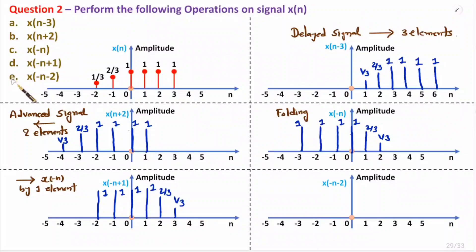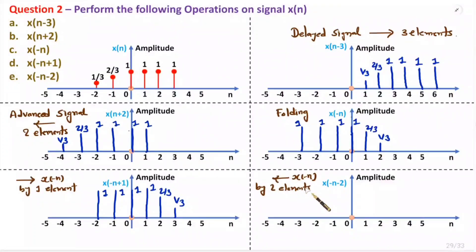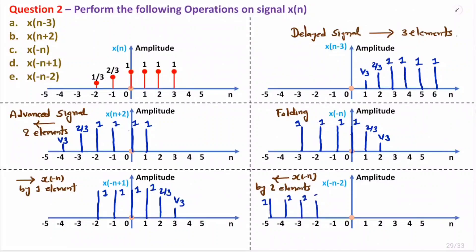Now observe operation e, which is x(-n-2). We take reference from x(-n) and with minus two, we shift x(-n) in the negative direction by two elements. The element at n = minus three will go to n = minus five, so plus one will be at minus five. Then we have three more elements with value plus one, followed by two-thirds and one-third. This is how we perform folding and shifting.